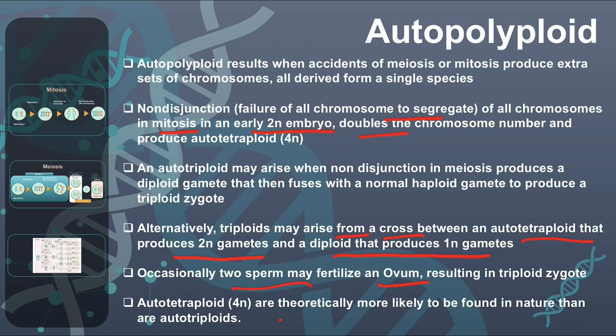In nature, what happens to triploids? When meiosis occurs, there is improper distribution compared to tetraploids. Tetraploids have an even number of chromosome sets, so meiosis is practically possible. Triploids have an extra odd copy, making meiosis problematic.